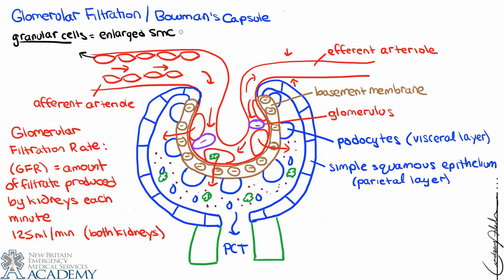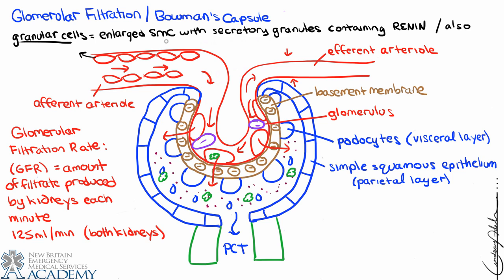We want to describe the cells of the juxtaglomerular complex — specifically the granular cells. Granular cells are the cells of the afferent arteriole; they are enlarged smooth muscle cells containing secretory granules that hold renin. Renin is an enzyme stored in these little packets, and whenever renin needs to be released, exocytosis occurs and renin is released into the afferent arteriole.